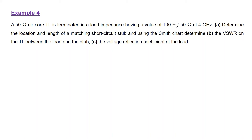In this last example in the course, we're going to work through the design of a single short stub based matching network. The scenario is that we have a 50 ohm air core transmission line terminated in a load impedance whose value is 100 plus J50 ohms at the operational frequency of 4 gigahertz. We want to first determine the location and length of the matching short circuit stub, and using the Smith chart determine the voltage standing wave ratio on the transmission line between the load and the stub, and finally the voltage reflection coefficient at the load.